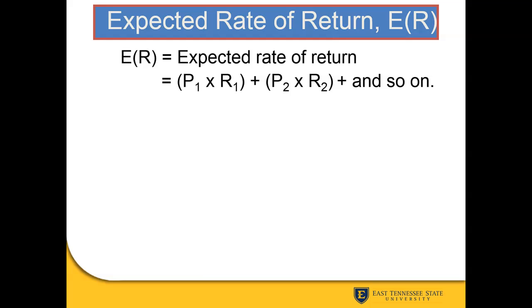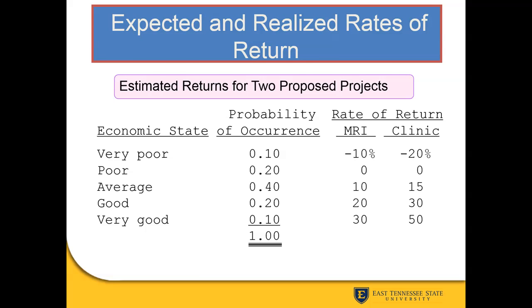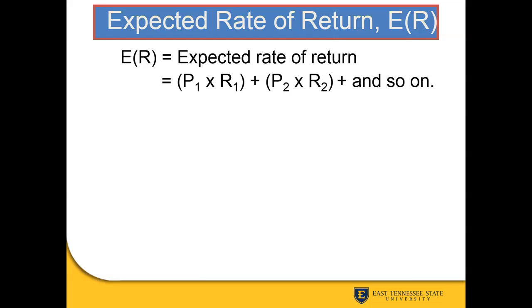The next logical step is the expected rate of return, or ER. How we solve for it: we take the probability of the event happening multiplied by the expected return, then add that to the probability of the second event happening multiplied by the second rate of return, and so on. We'll go through an example using the MRI machine data to help tie it together.